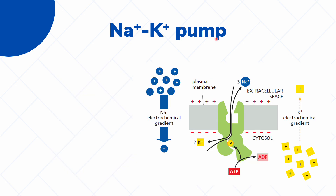Now let's look at the different effects of the sodium-potassium pump. First, let's note the electrochemical gradients for sodium and potassium. For sodium, there is a high concentration outside the cell compared to the inside. For potassium, there is a high concentration inside the cell compared to the outside. We can also notice that there is an unequal exchange of positive ions: for every three sodium ions put out by the pump, it only takes in two potassium ions. This helps create the positive charge on the outside and the negative charge on the inside of the cell.